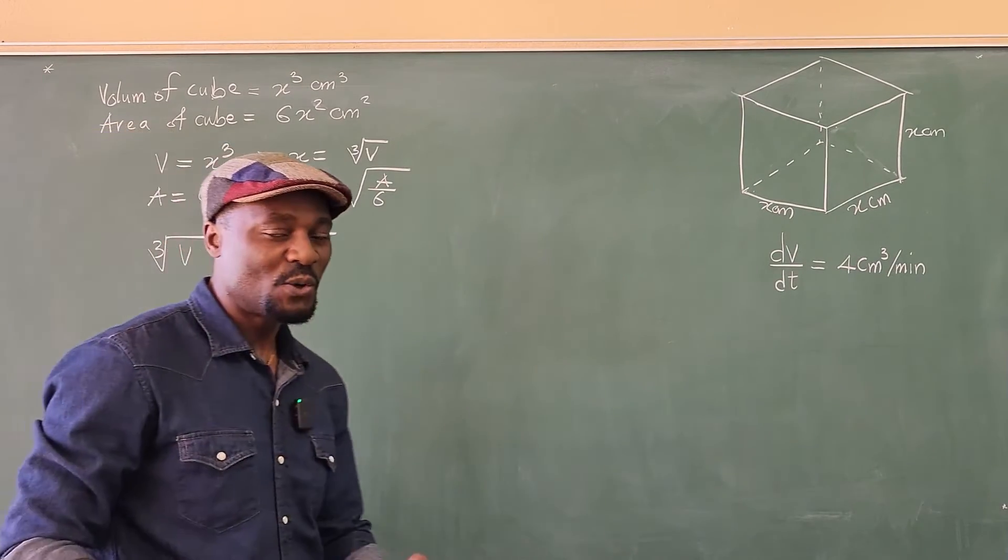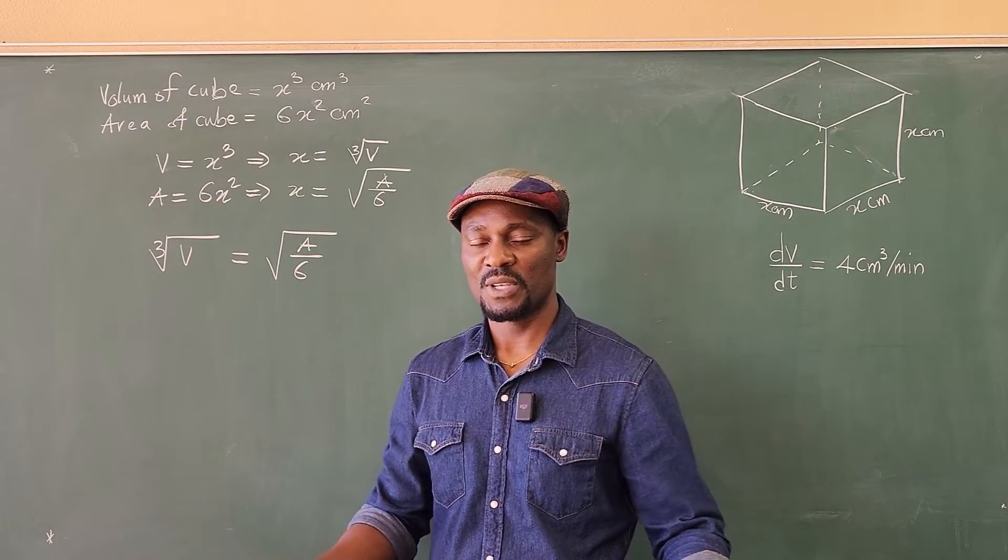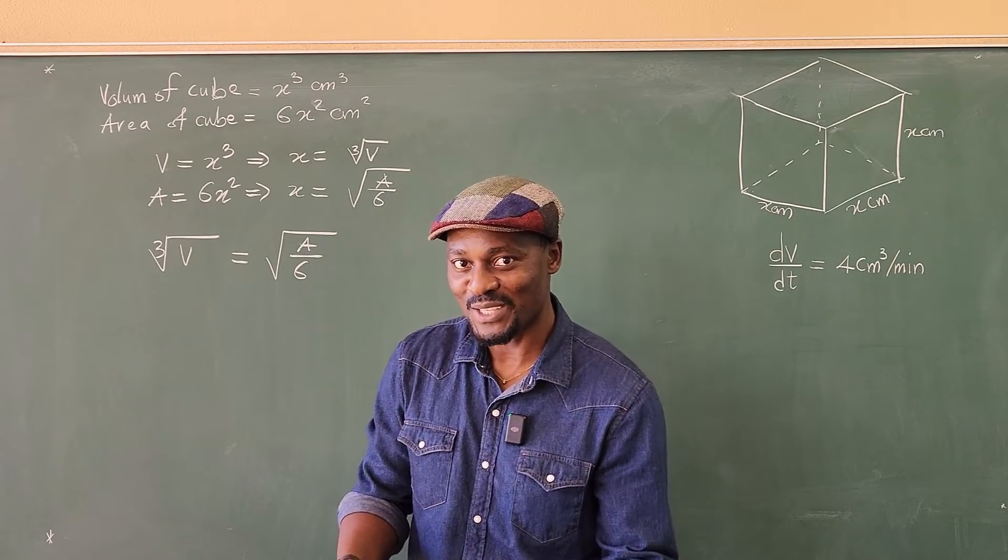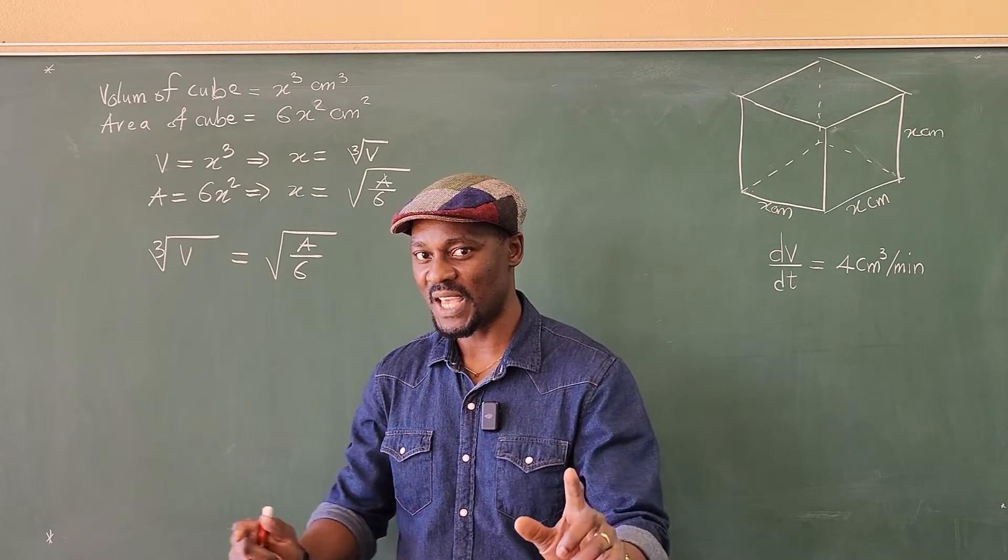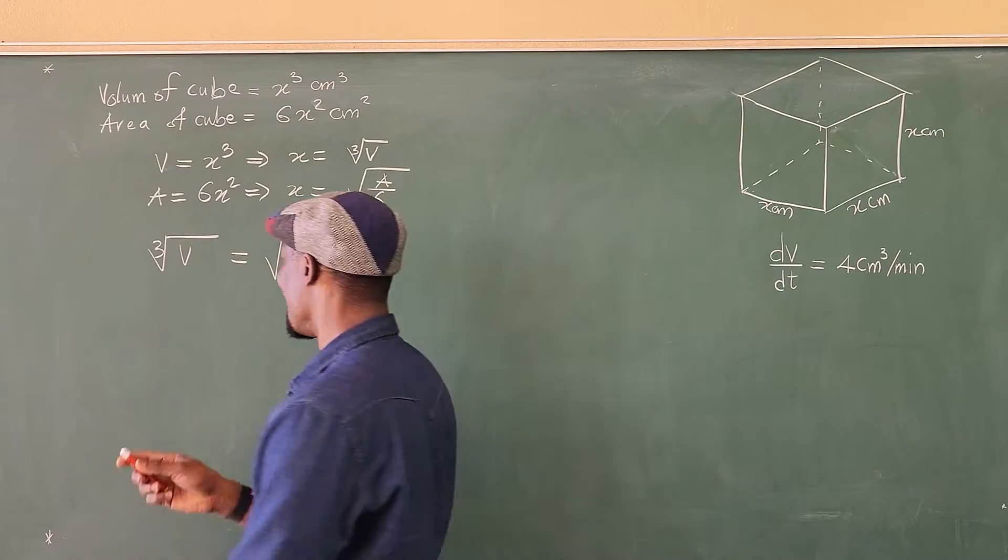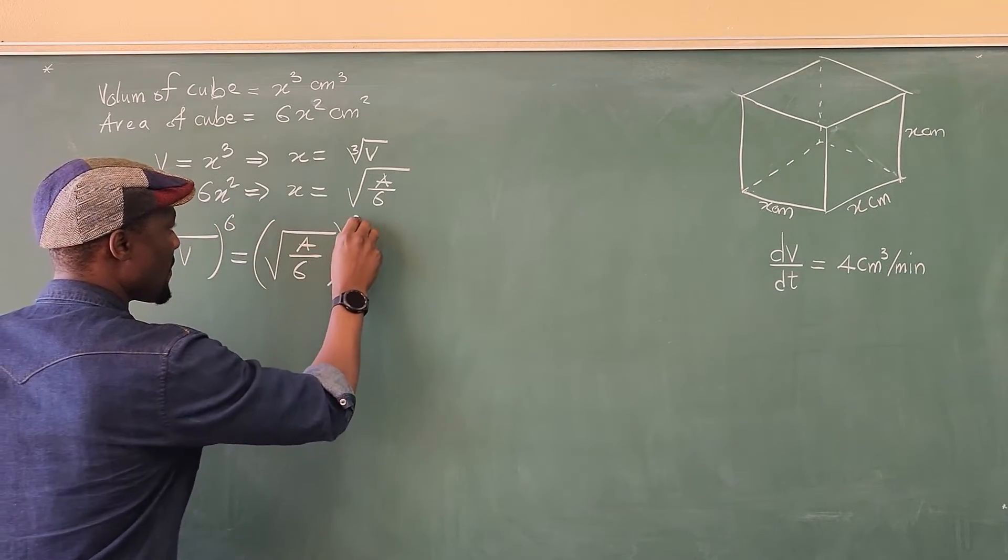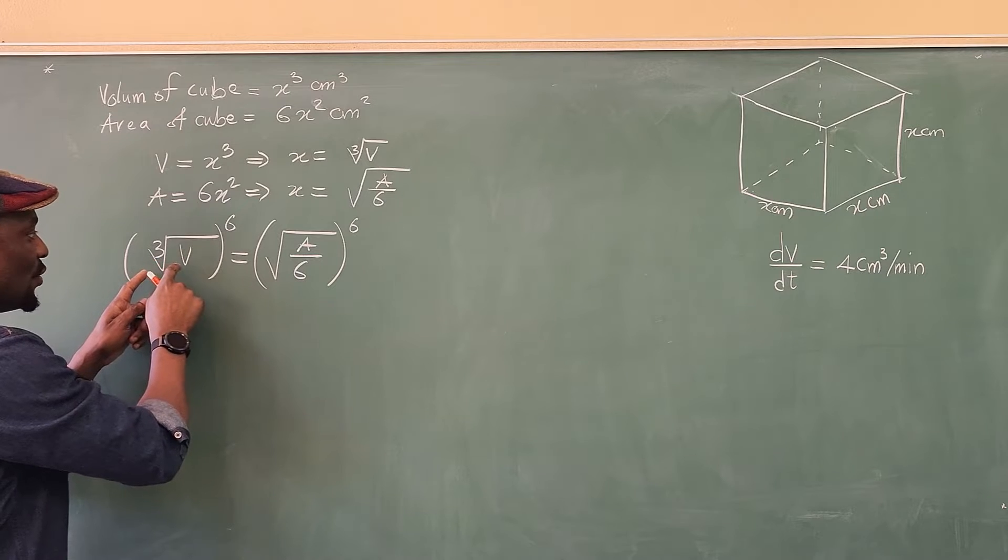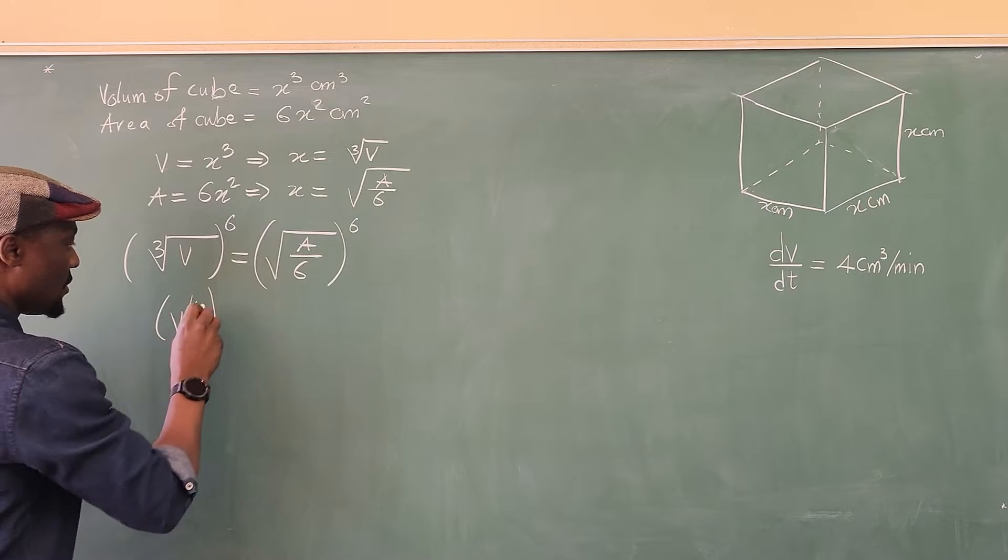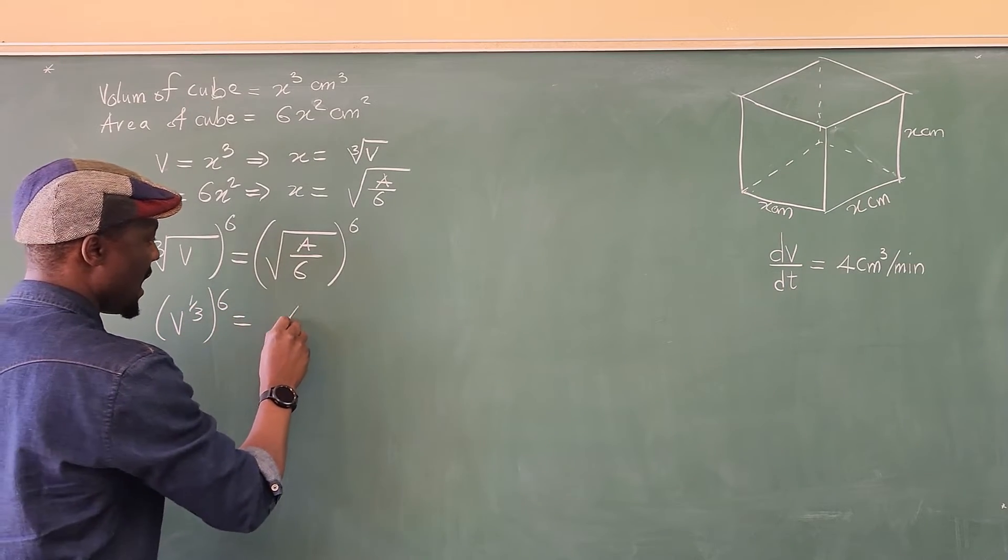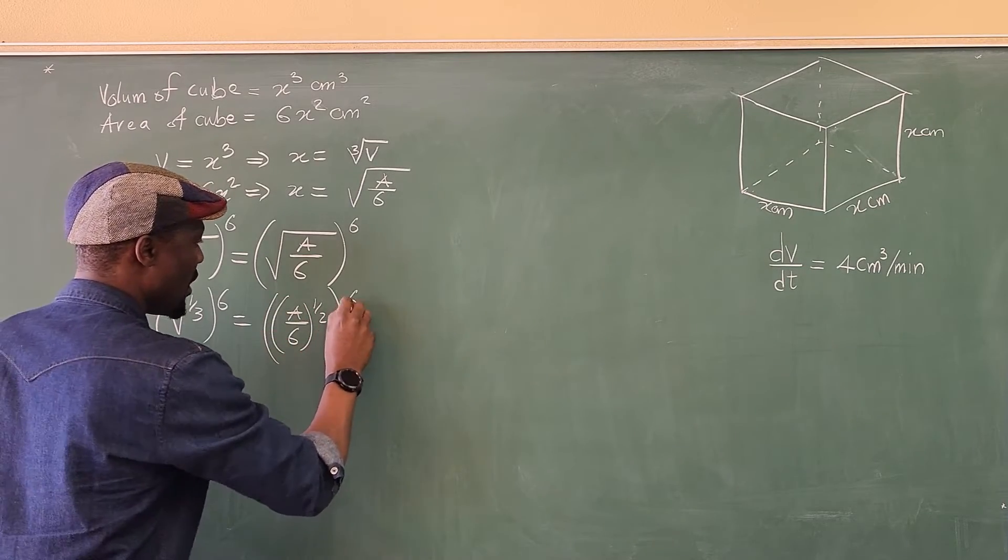Now they don't look really nice. What can we do? Get rid of the cube root and the square root. How to get rid of cube root and square root at the same time is to use the sixth power, which is the LCM of 3 and 2. So we're going to raise both sides to the sixth power so that the cube root of V raised to power 6 can be V to the one-third to the sixth equals A over 6 to the one-half to the sixth power.